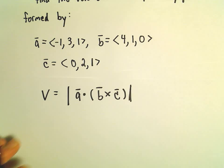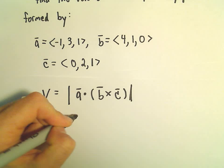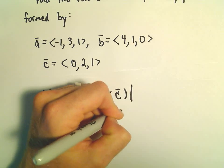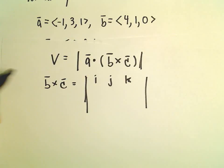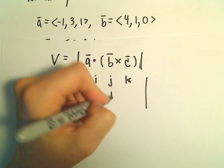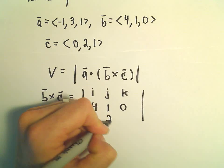Setting up the determinant with i, j, k. B has components 4, 1, 0. C has components 0, 2, and 1.